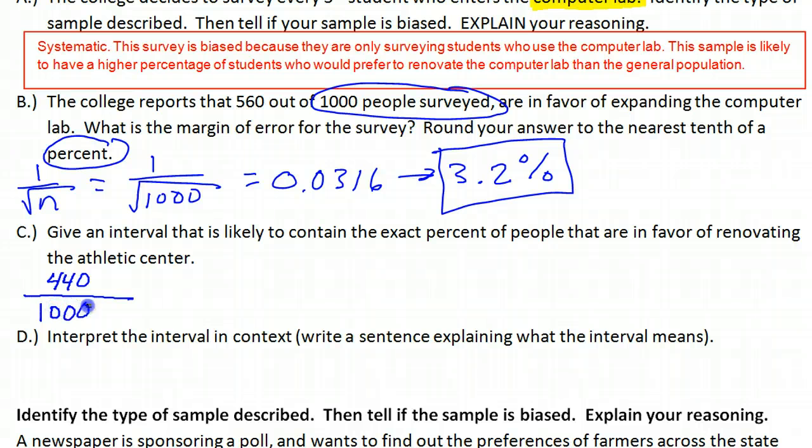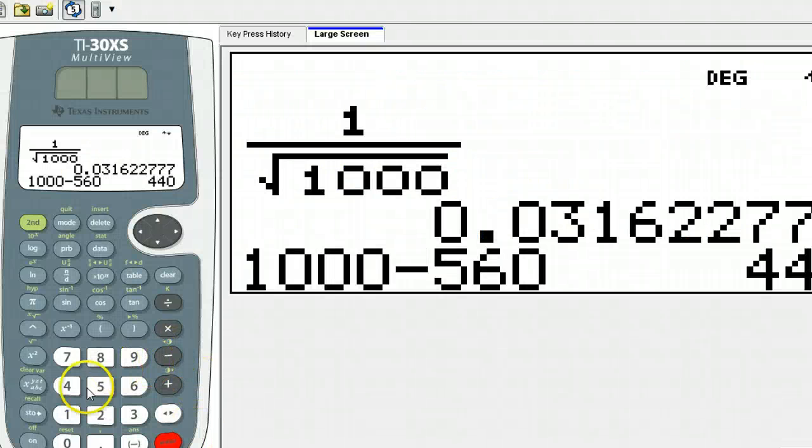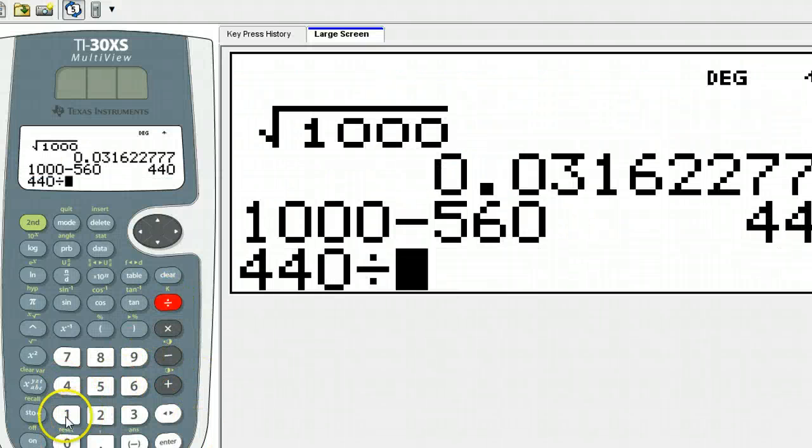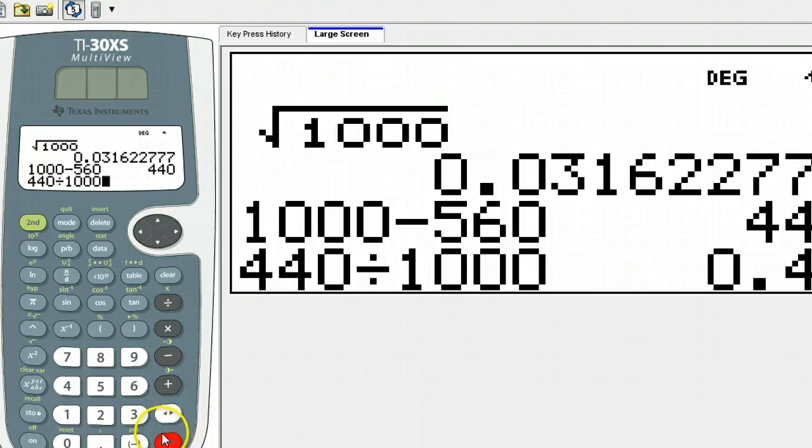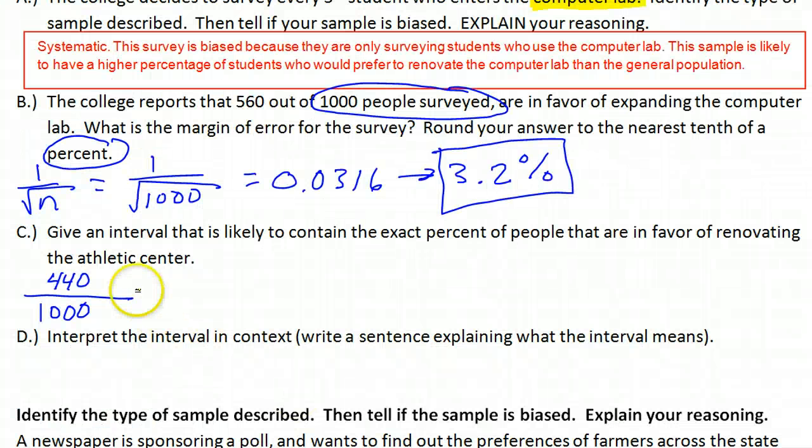We need to find this percent, 440 out of 1,000. That is 0.44 or 44%. This is what we're starting from. That's the percentage of people in the sample who are in favor of renovating the athletic center. If we start from this and then do our margin of error, plus or minus 3.2%.